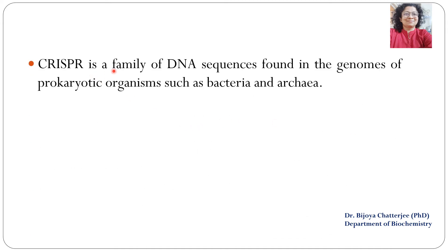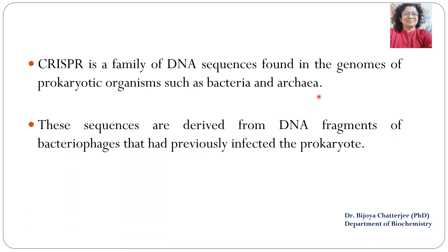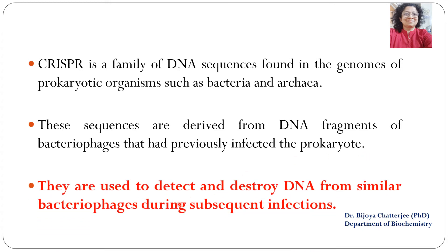CRISPR is a family of DNA sequences found in the genome of prokaryotic organisms such as bacteria and archaea. These sequences are derived from DNA fragments of the bacteriophage, also known as virus, that have already infected the prokaryote. They are used to detect and destroy DNA from similar bacteriophages during subsequent infections.